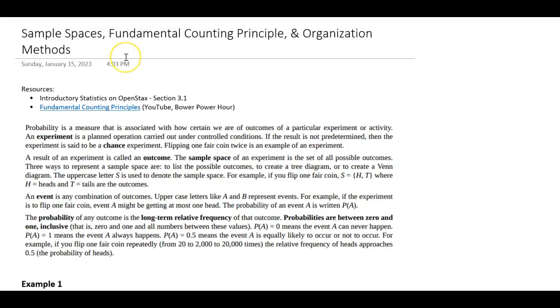So just know that probability is trying to figure out how certain we are for outcomes to happen. An experiment is any planned operation where you're controlling some of the conditions. If you don't know the result ahead of time, then there's some chance like this could happen or that could happen.